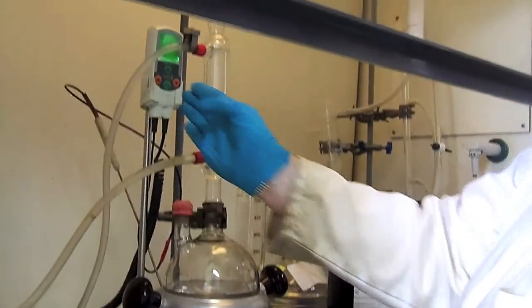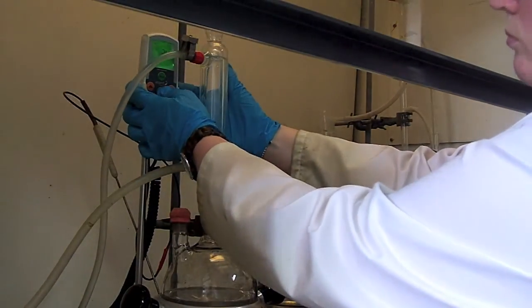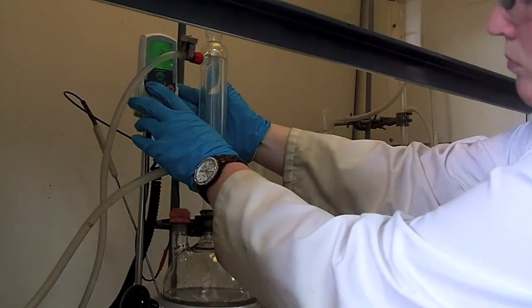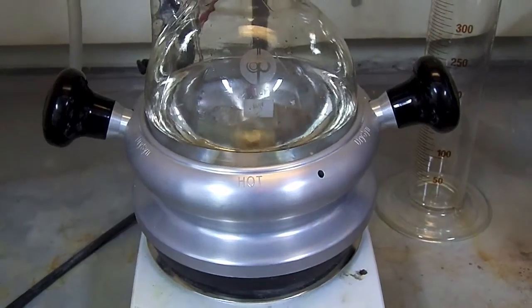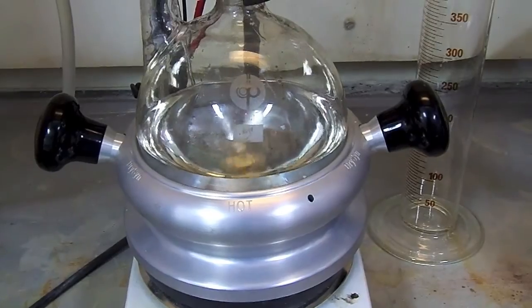Set the stirrer hot plate to heat and set the temperature control to approximately 170 degrees. Make sure you've included a stirrer bar to stir the reaction.